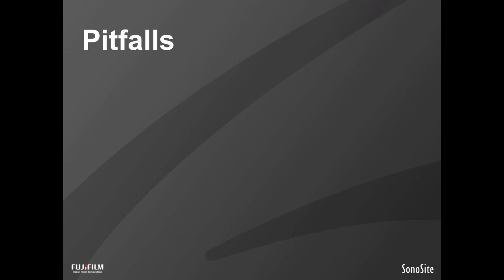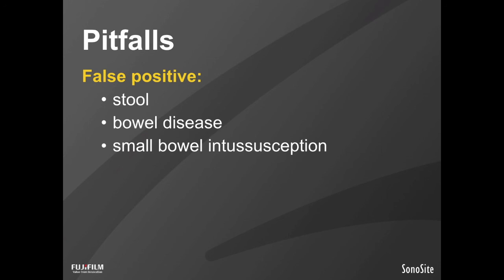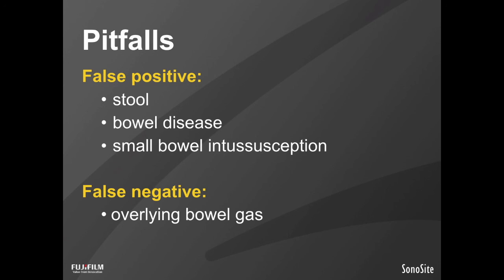A couple of things can make visualization tricky. Stool — particularly on the curvilinear probe — may have a semicircular or circular appearance with multiple layers; in those circumstances, change over to a high frequency linear probe for improved visualization. Bowel disease like inflammatory bowel disease will cause thickening of the bowel wall, which may give some blurring rather than a true circular targetoid appearance. Small bowel intussusception can be confusing — remember to use that two and a half centimeter minimum size for ileocolic intussusception. Overlying bowel gas that you haven't been able to push out will definitely interfere with visualization.